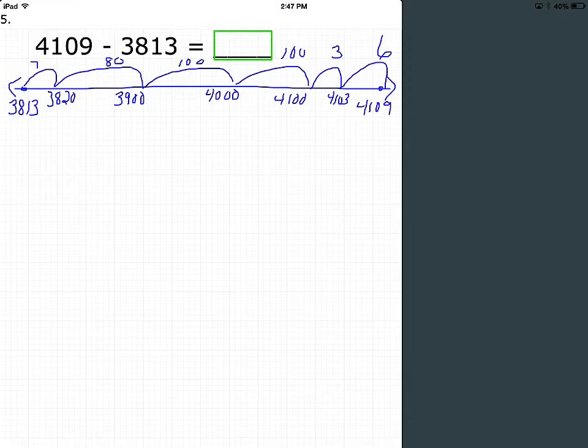Now, I split up this jump from 4,100 to 4,109 into 2 jumps, so I could take this 3 and bond it with the 7 to make a 10. So that's 10.